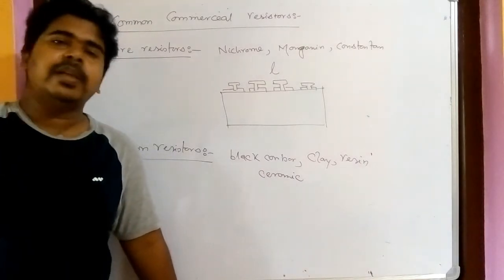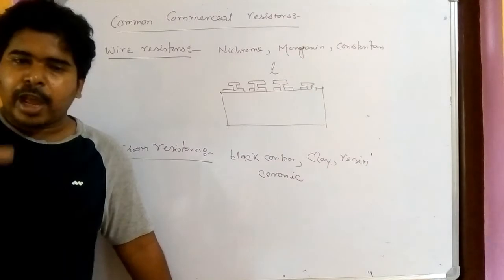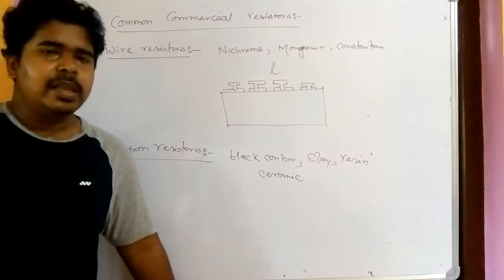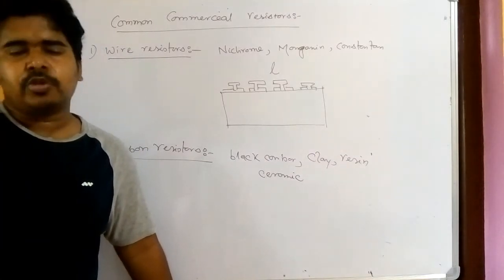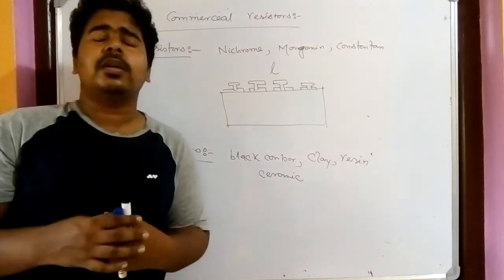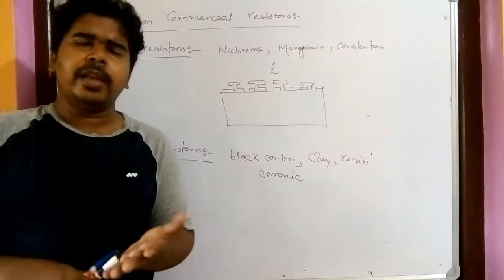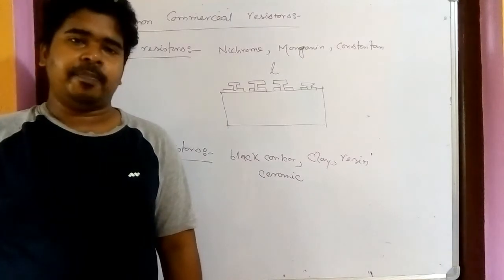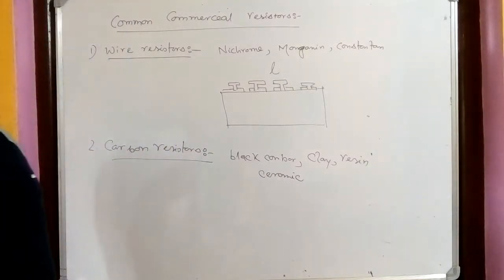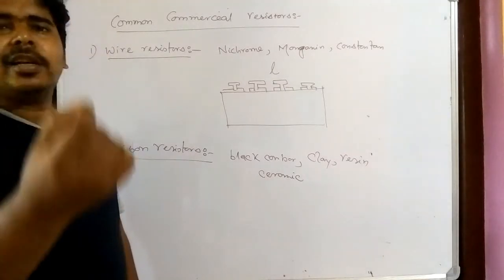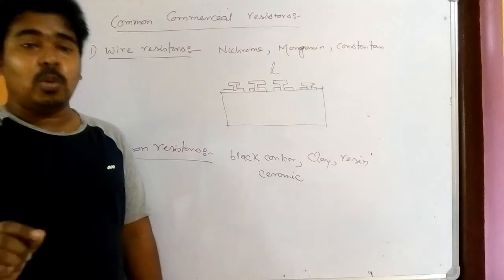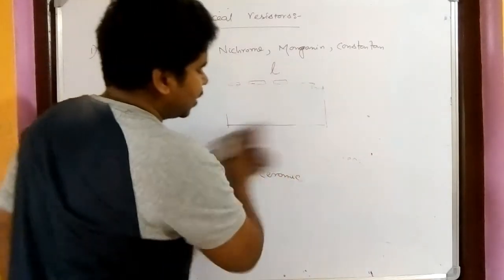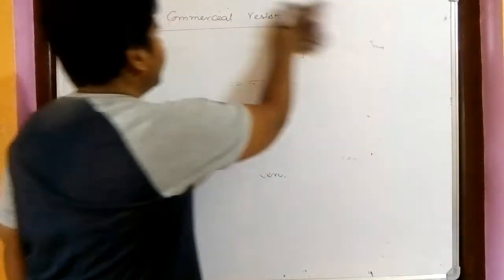The question is: how do we know the resistance value of a carbon resistor? One way is to use a multimeter, but it's not always practical to bring a multimeter and check every resistor. So we use color codes — the colored bands on the resistor — to find the resistance value.